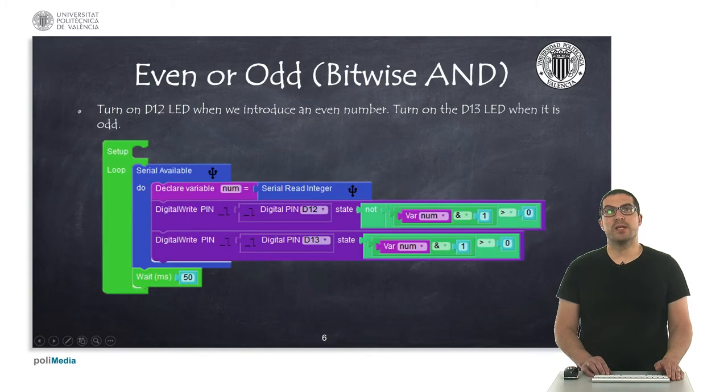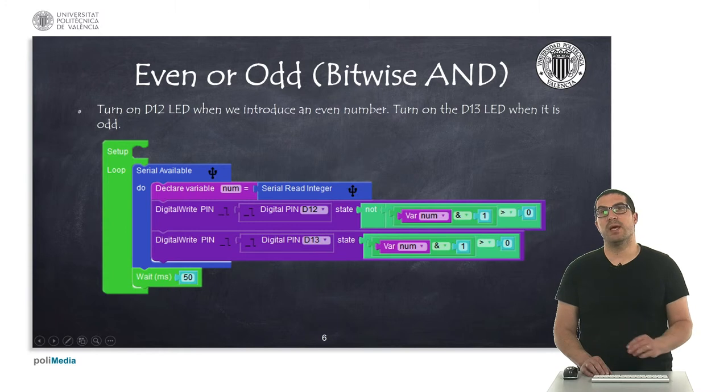In this other example, here what I'm doing is a bitwise AND operation. Basically what I'm reading is a number that I will introduce on the console. If this number is even or odd, then I will turn on the LED connected to pin 12 or the LED connected to pin 13.